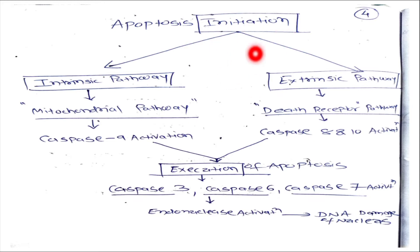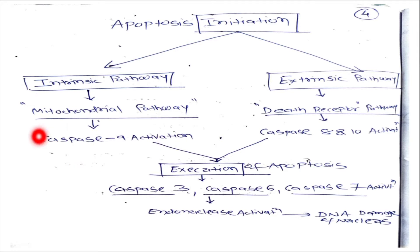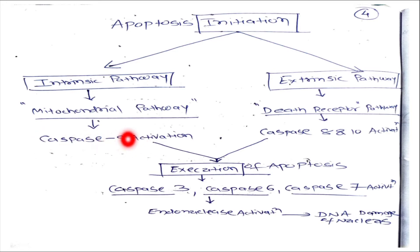For initiation, you have two pathways: first is the intrinsic pathway and the second is the extrinsic pathway. The intrinsic pathway is carried out in the mitochondria — that's why it is known as the mitochondrial pathway — and it leads to caspase 9 activation. In the extrinsic pathway, you will have death receptor activation, which finally leads to caspase 8 and 10 activation. This is a very important MCQ point.